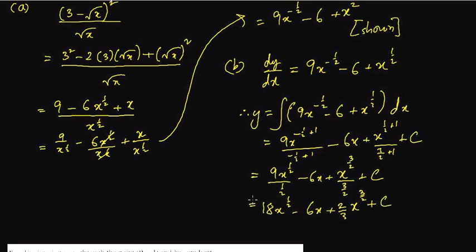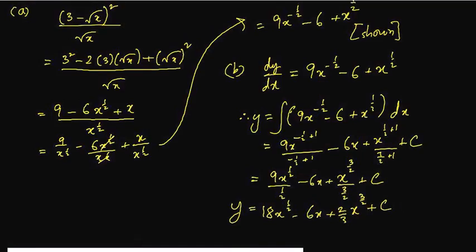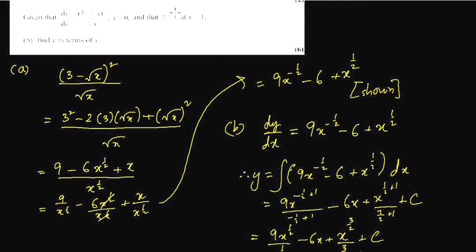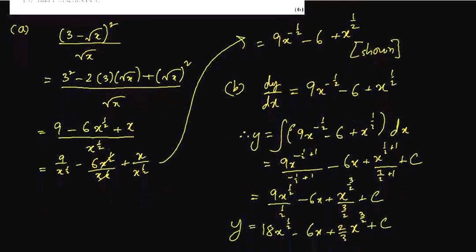Now the sum is not done yet. We found y but we have a plus C. Unless we find the value of plus C, it is incomplete. So for that, they have given us two values: x equals to 1, y equals to 2/3 when x equals to 1.